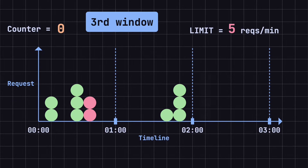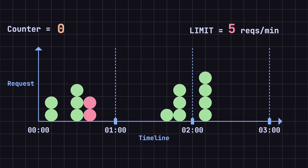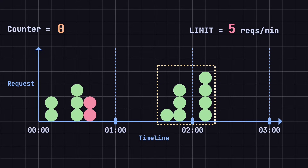In the third minute window, at the 2-minute-and-10-second mark, the system receives 4 requests. The request count does not exceed the threshold, so all requests are processed. The counter records 4 requests. At the end of the third minute, the counter resets to 0. From this example, we see that the fixed window counter algorithm divides time into fixed windows, with request counts within each window being independent, ensuring the system does not overload due to temporary spikes. However, one potential issue is that requests may exceed the threshold at the window boundaries. For example, from 1 minute and 40 seconds to 2 minutes and 10 seconds, the system handled a total of 8 requests (1 plus 3 plus 4), exceeding the threshold of 5 requests per minute.